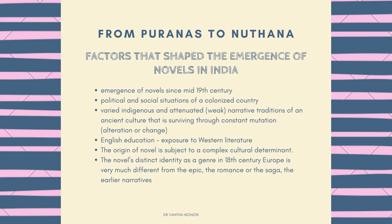From Puranas to Sanotana: factors that shape the emergence of novels in India. Meenakshi Mukherjee deals with the factors that shaped the emergence of novels in India, which occurred during the mid-19th century. The political and social situations of a colonized country were major reasons in shaping the genre. The weak narrative traditions of an ancient culture surviving through constant mutation, along with English education and greater exposure to Western literature, were also the most important factors. The origin of the novel is subject to a complex cultural determinant, and the novel's distinct identity as a genre in 18th century Europe is very different from the epic, the romance, or the saga — the earlier narratives.